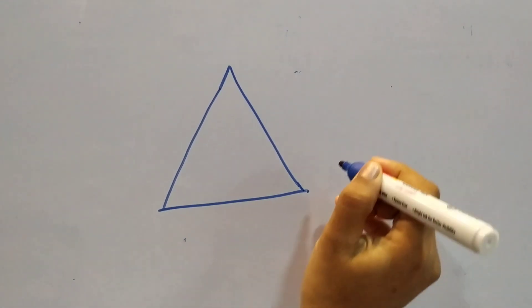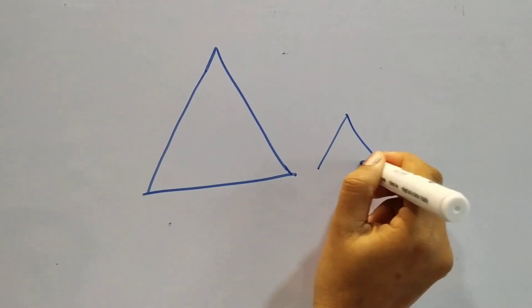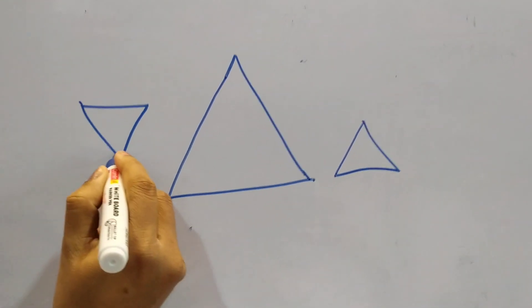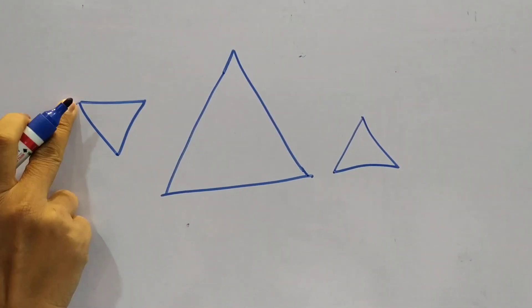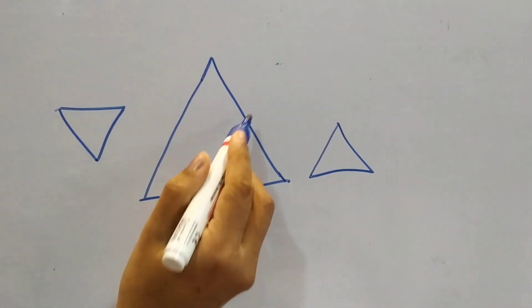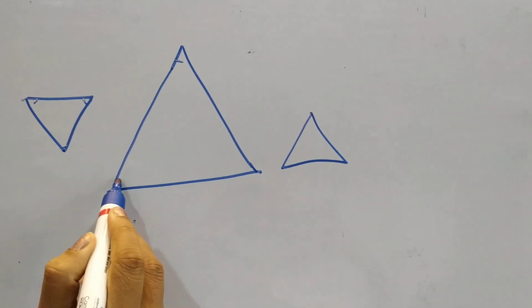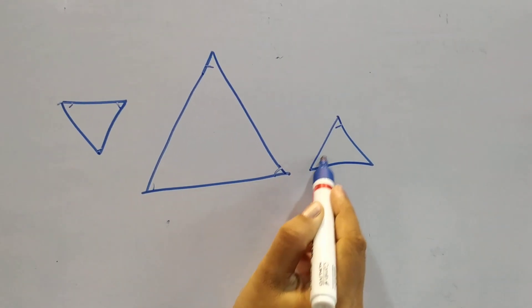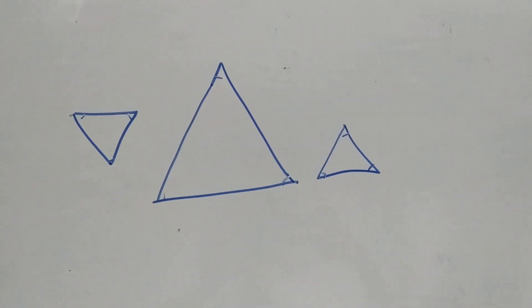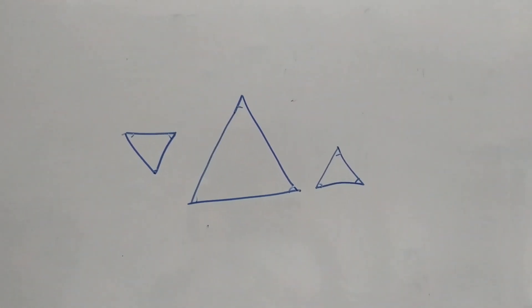So a triangle has three sides and three corners. A triangle has three sides, three corners, and it can be of different sizes.